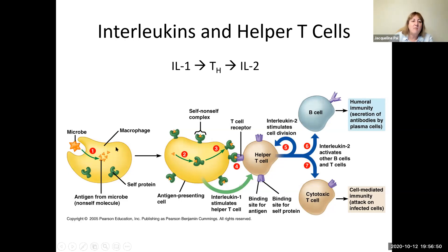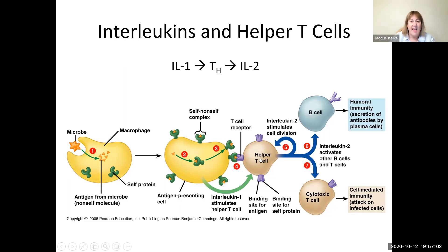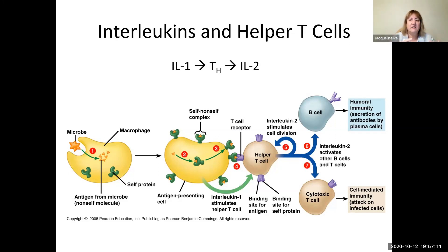We had that macrophage that was exposed to whatever the antigen was — ingested it, broke it up, took a little piece of it, and attached it to an MHC protein on its surface. Then the T cell could recognize it. The T cell binding to the antigen on the MHC class II receptor on the macrophage — which is now an antigen-presenting cell — activates the whole T cell sequence.